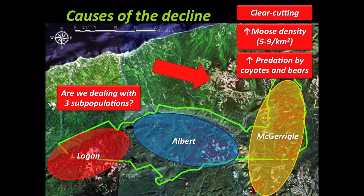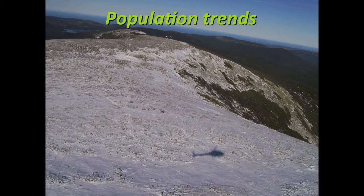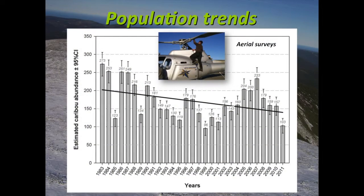We have the highest moose density in Quebec recorded around Gaspésie National Park — up to five to nine moose per square kilometer. That's really impressive. It could also drive an increase in predation pressure by coyotes and bears, since wolves were extirpated from that region about a century and a half ago. Looking at population trends, for the last three years we've had annual aerial surveys, showing a constant decline with some year-to-year fluctuations.